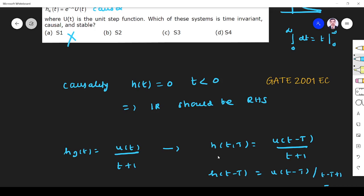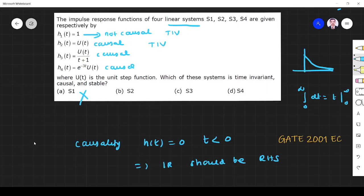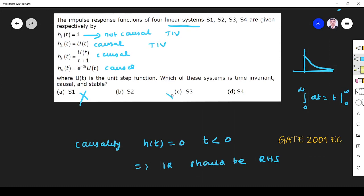H3(t,τ) = U(t-τ)/(t+1), H4(t-τ) = U(t-τ)/(t-τ+1). These two equations are not same. So shift in input will not produce shift in output. So what we get is, it is time variant. So option three is also not a correct answer.